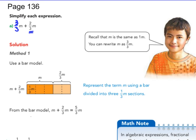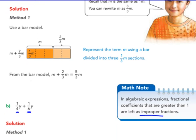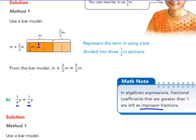You can write that one m as three-thirds. Why three-thirds? Because my other denominator of my like term is thirds. So three-thirds m plus two-thirds m, and you can see the solution is worked out here using a bar model. My three-thirds in the darker orange plus my two-thirds in the lighter orange adds together to give me five-thirds m. Notice this math note here: very important. In algebraic expressions, fractional coefficients that are greater than one are left as improper fractions.